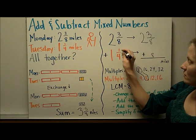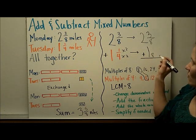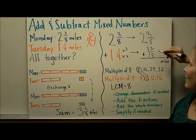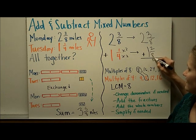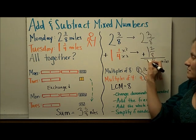So the whole number stays the same. It would become 1 and 2/8. And then I add the fractions. 3/8 plus 2/8 is 5/8. And then I'm going to add the whole numbers. 2 plus 1 is 3.